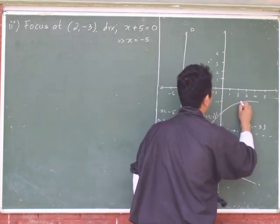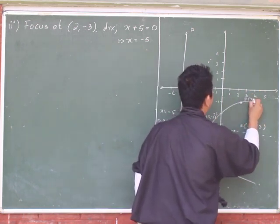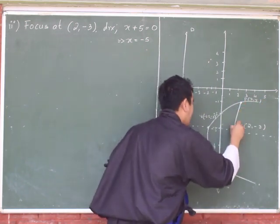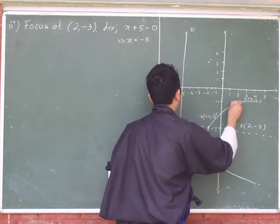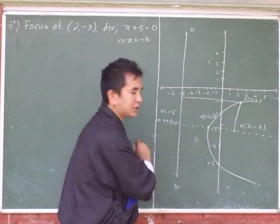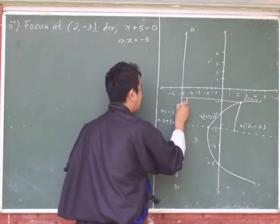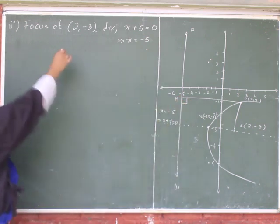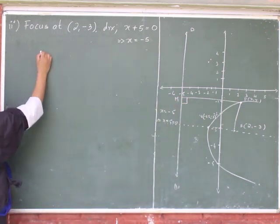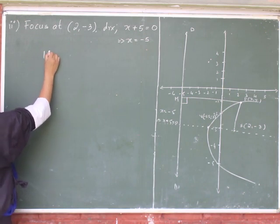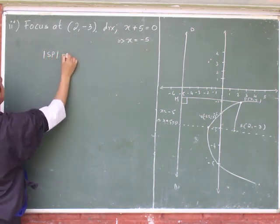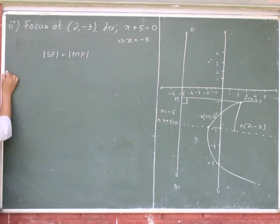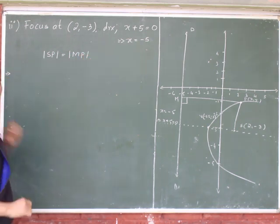Now to find the equation of this parabola, the process is the same as usual. Take a point P(x, y) on the parabola. Join this point with the focus S, and from point P draw a perpendicular to the directrix, meeting it at point M. The angle at M should be 90 degrees. Now use the definition of the parabola.